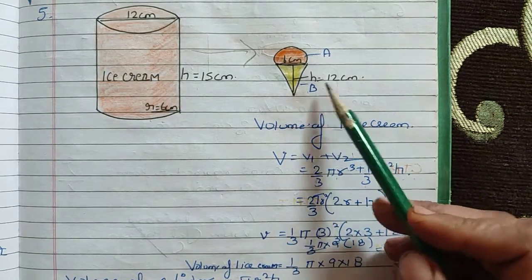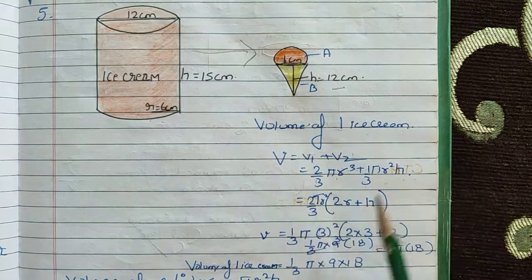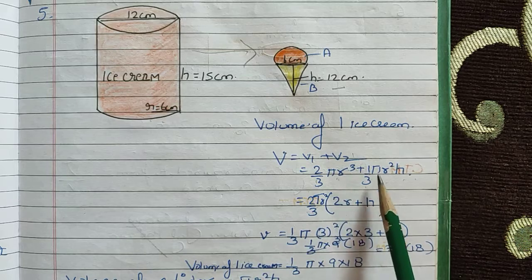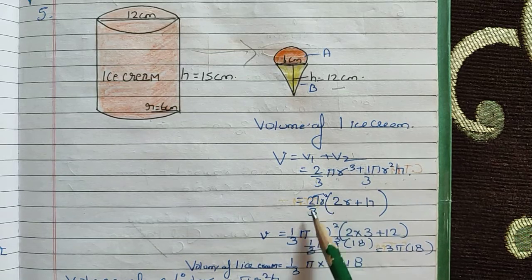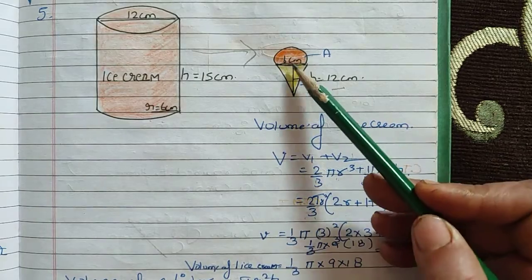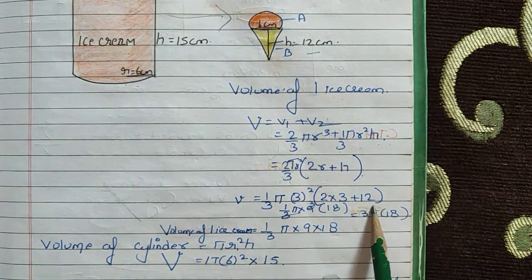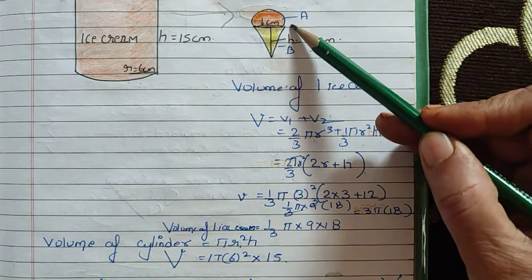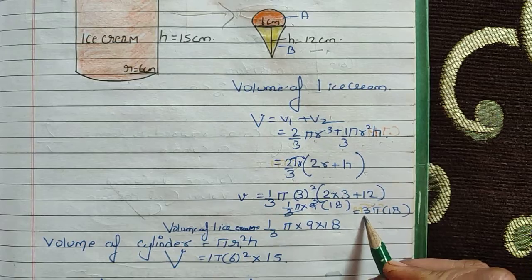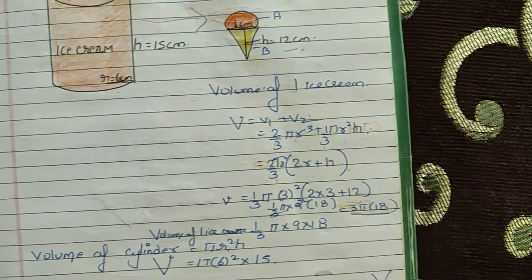The height of the cone is 12 cm, and the diameter is 6 cm, so the radius is 3 cm. The volume of one ice cream is the volume of the cone plus the volume of the hemisphere: (1/3)πr²h plus (2/3)πr³. Since the radius of the hemisphere equals the radius of the cone, we combine these terms.